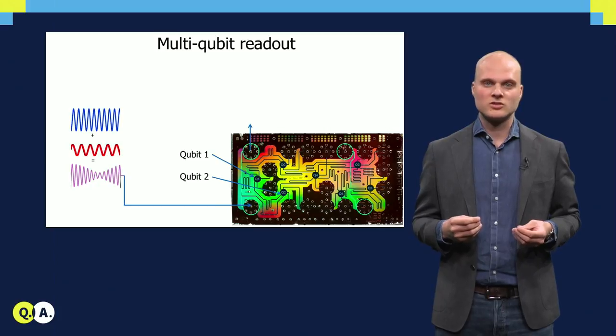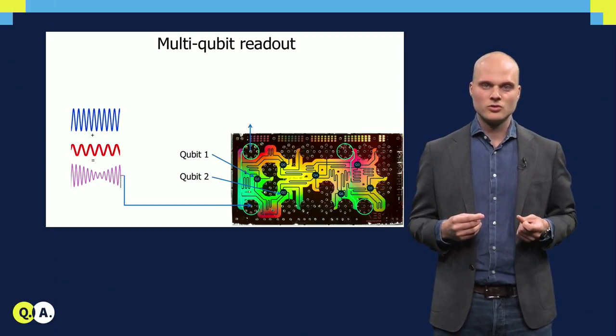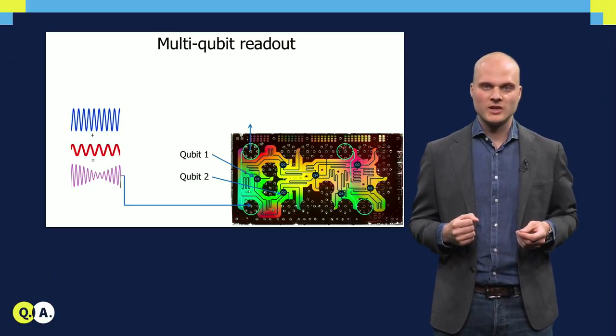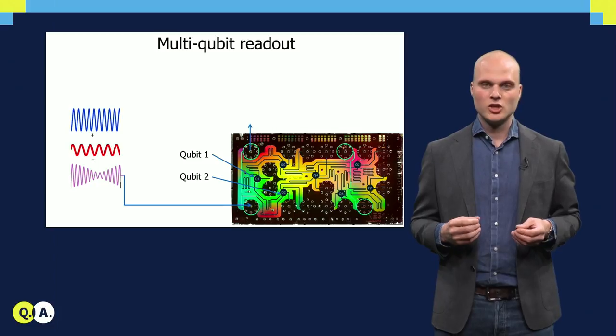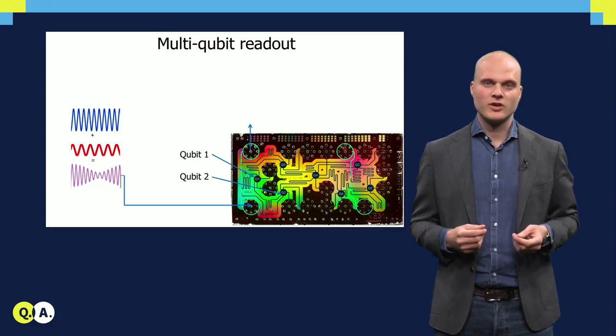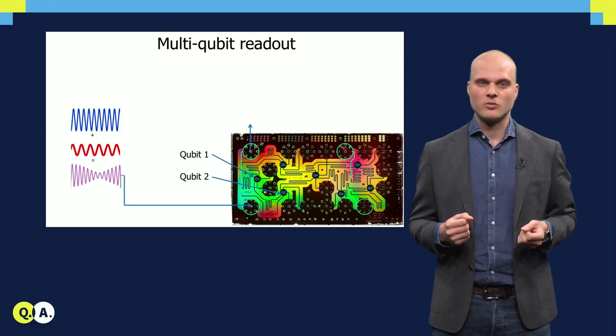By sending down a pulse that is the sum of multiple components, in this case two, each tuned to its own readout resonator, we can probe multiple resonators at the same time. Each component will only be picked up by the targeted resonator. In the analysis of the output signals, we separate the different frequency components.